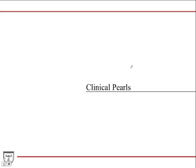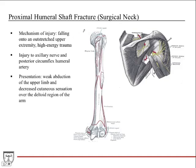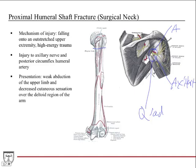For clinical pearls: proximal humeral shaft fractures typically occur from falling on an outstretched upper extremity in high-energy trauma. The key clinical concern is injury to the axillary nerve, which wraps around the surgical neck through the quadrangular space along with the posterior circumflex humeral artery. Clinically, patients present with weak abduction because the deltoid is de-innervated, and decreased cutaneous sensation over the lateral aspect of the arm. You test this by assessing abduction strength and cutaneous sensation over the lateral proximal arm.